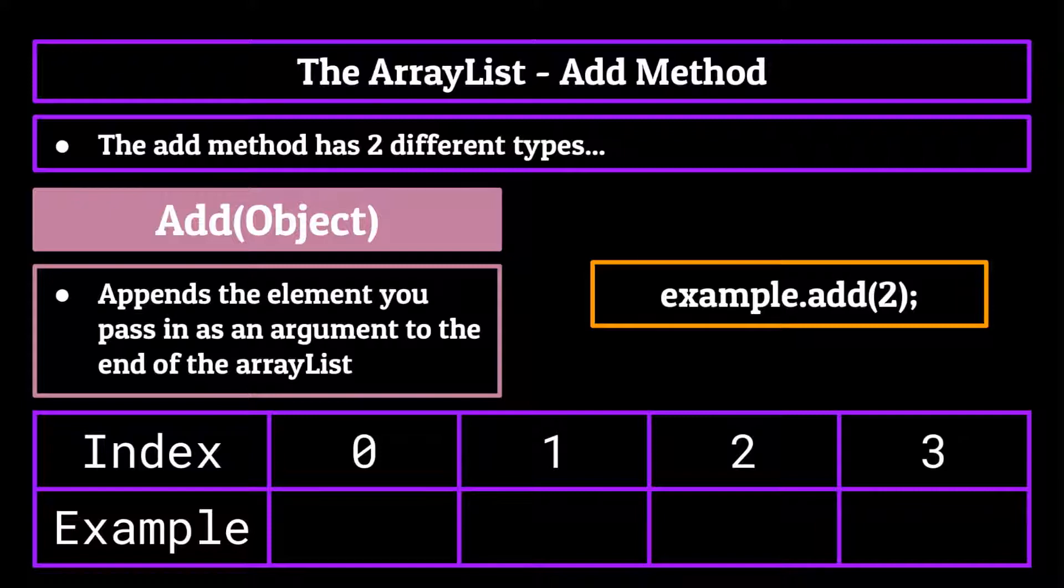Okay, so when we run our code, since the ArrayList is empty, it's going to add it at the first index, index zero. Now if we run another add method, and this time pass in the integer five as an argument, since the zero with index is already taken, it will be slotted in as the next available index, that being the first.